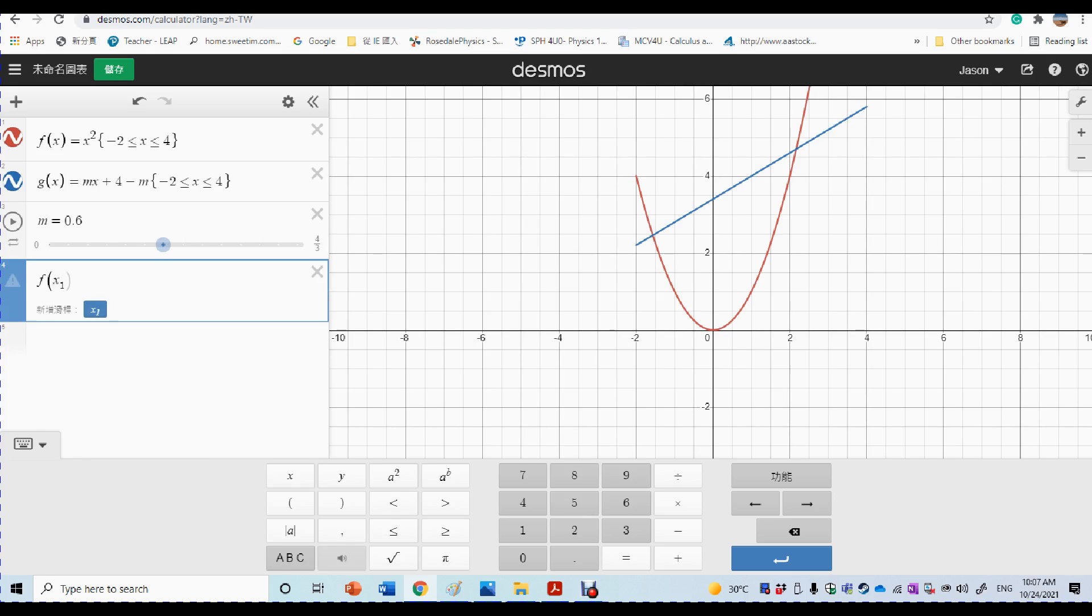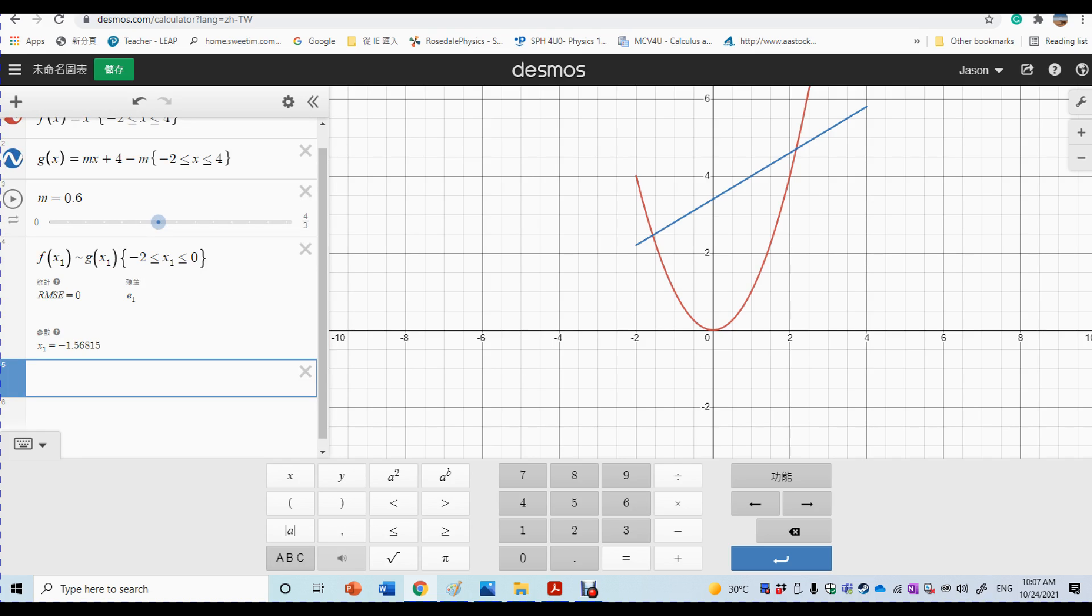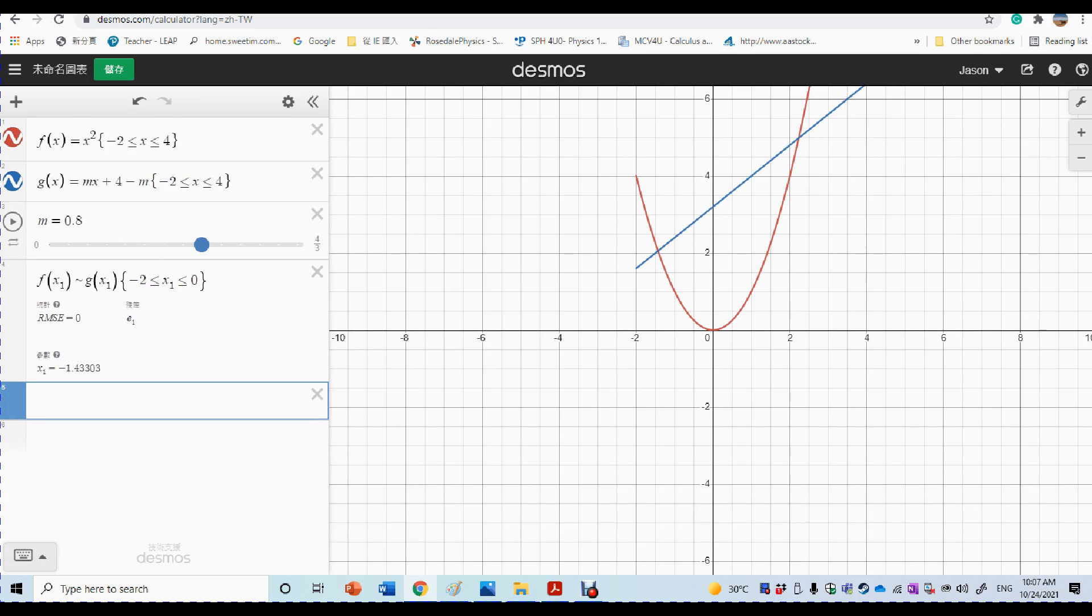And so the first intersection point is between minus 2 and 0. So how can we find the intersection point? Here's the way to do it. So you just put x1, x1 is for the first interval, and use this symbol x1. And you want to restrict the domain as well. So for the first intersection point, it seems like that x1 should be between minus 2 and 0. So you see that's an intersection point there, which is minus 1.56815. So you can see that if your M is changing, your intersection points are also changed.